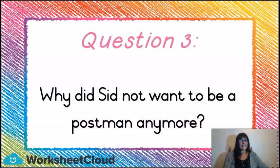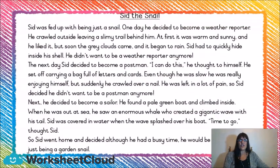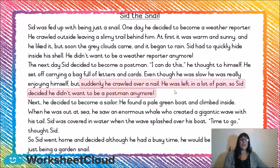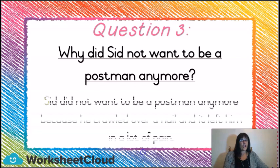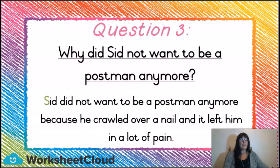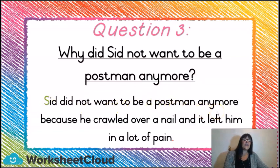Question 3: why did Sid not want to be a postman anymore? Let's go back to our comprehension. But suddenly, he crawled over a nail — he was left in a lot of pain. So Sid decided he didn't want to become a postman anymore. The answer is: Sid did not want to be a postman anymore because he crawled over a nail and it left him in a lot of pain. Can you see I used some of my question in my answer?